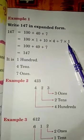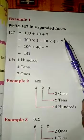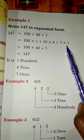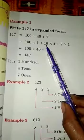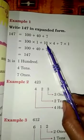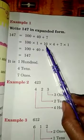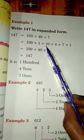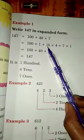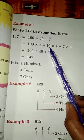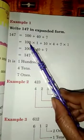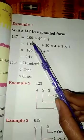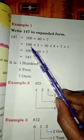Because in ones place, 7 is multiplied by 1. And in tens place, 4 is multiplied by 10. And in hundred place, one is multiplied by 100.